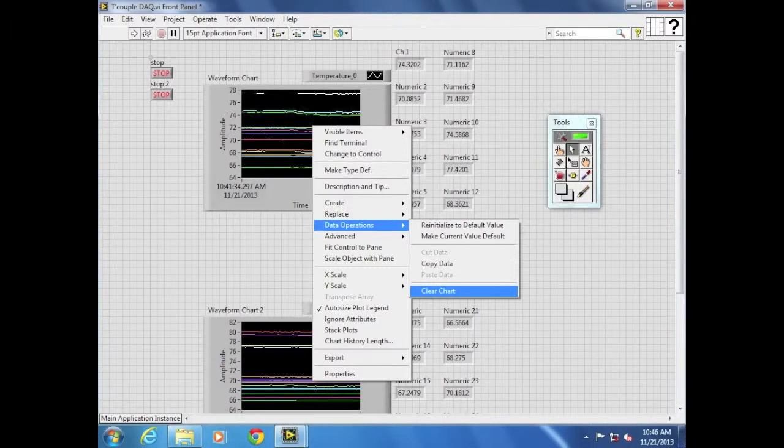Clear the waveform chart of its data by right-clicking the chart and selecting Data Operations Clear Chart.